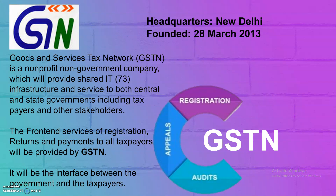Initially, the central government held 24.5% stake in GSTN while the state governments held 24.5%. The remaining 51% was held by non-government financial institutions. This council held its first meeting on 4th May 2018. The government needed outsourcing to help take forward the GSTN system of networks.